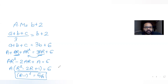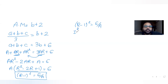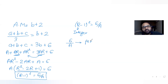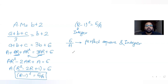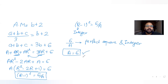We know r is an integer, so (r − 1)² is a perfect square. Therefore 6/a must also be a perfect square as well as an integer. The only possible value of a that satisfies this is a = 6, because 6/6 = 1, which is both a perfect square and an integer.